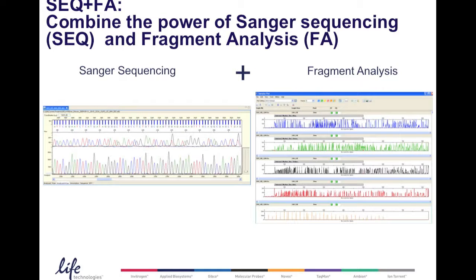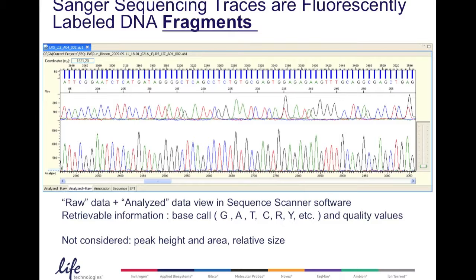Seq Plus FA means Sanger sequencing plus fragment analysis. It combines the power of Sanger sequencing, shown here in these traces, and fragment analysis. You can think of Sanger sequencing traces as fluorescently labeled DNA fragments. That's what they are. The polymerase builds in fluorescently labeled dye terminators, nucleotides, and that's what you see as a fragment.